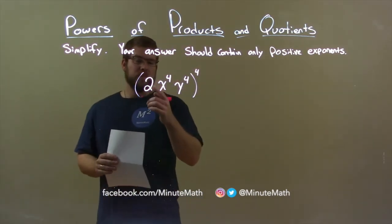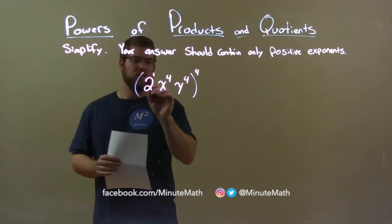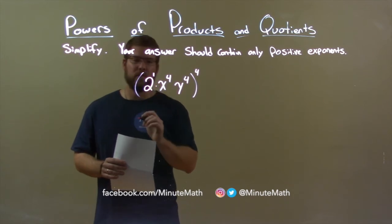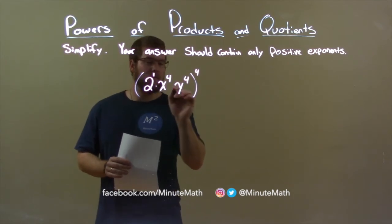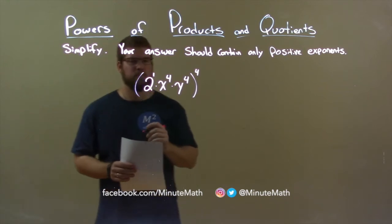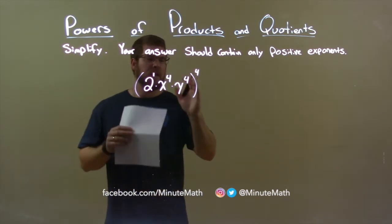Well, we know 2 is really 2 to the first power, and between 2 and the x to the fourth is multiplication. Between x to the fourth and y to the fourth is also multiplication. To simplify this, inside of our parentheses,